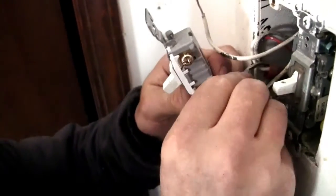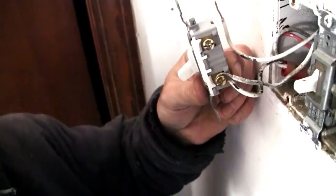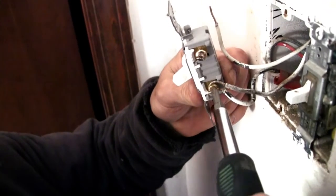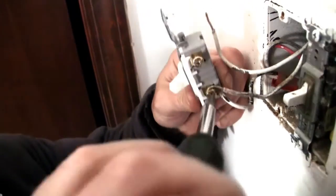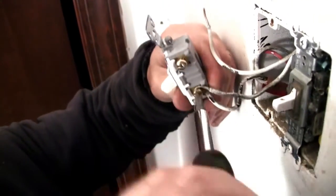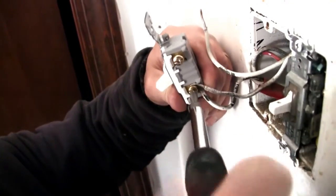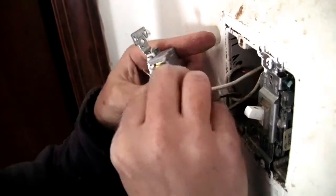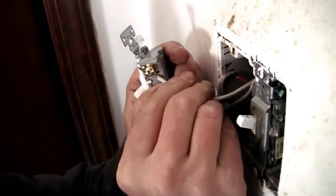A switch can be wired using the back stabs on the back or the screws on the side. We use the screws because they secure the wire better. I'm wrapping that around the screw. Then we have to tighten it back up. Make sure it's good and tight.